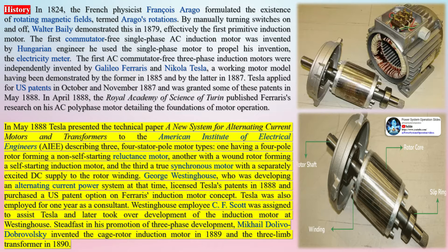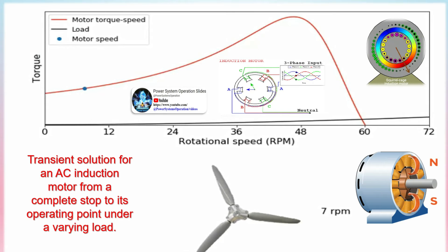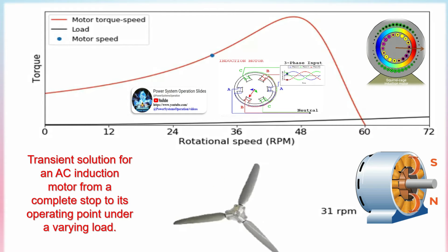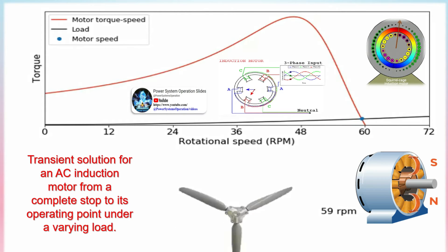In 1824, French physicist François Arago formulated the existence of rotating magnetic fields, termed Arago's rotations. By manually turning switches on and off, Walter Bailey demonstrated this in 1879, effectively creating the first primitive induction motor. The first commutator-free single-phase AC induction motor was invented by a Hungarian engineer, who used the single-phase motor to propel his invention, the electricity meter.